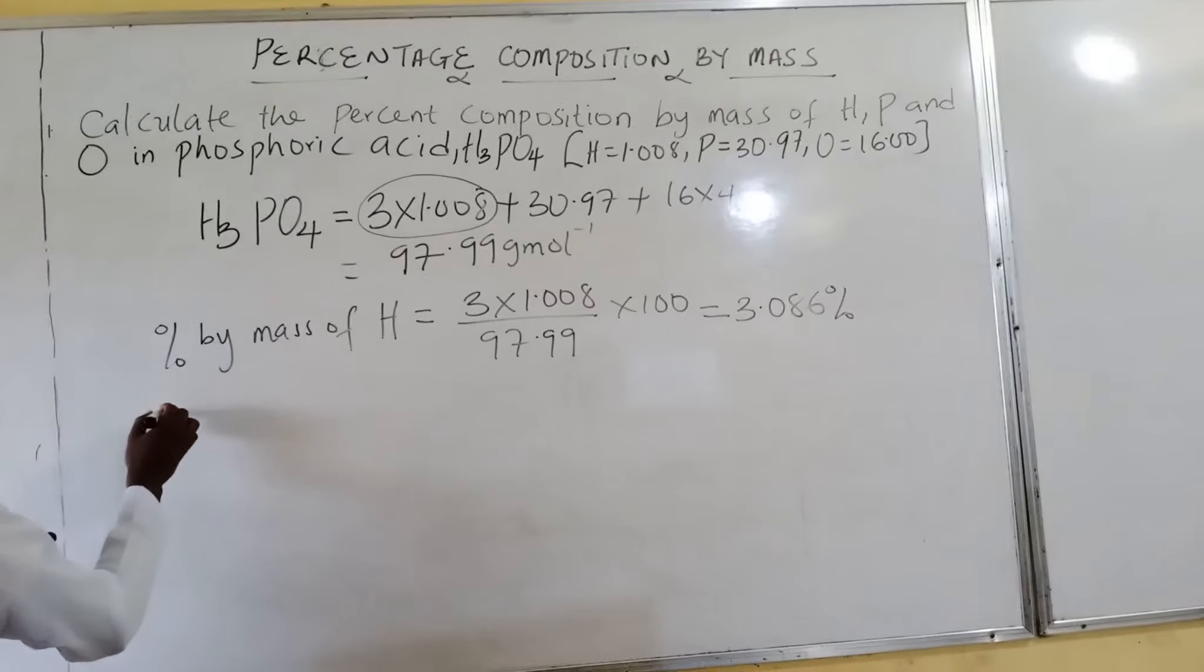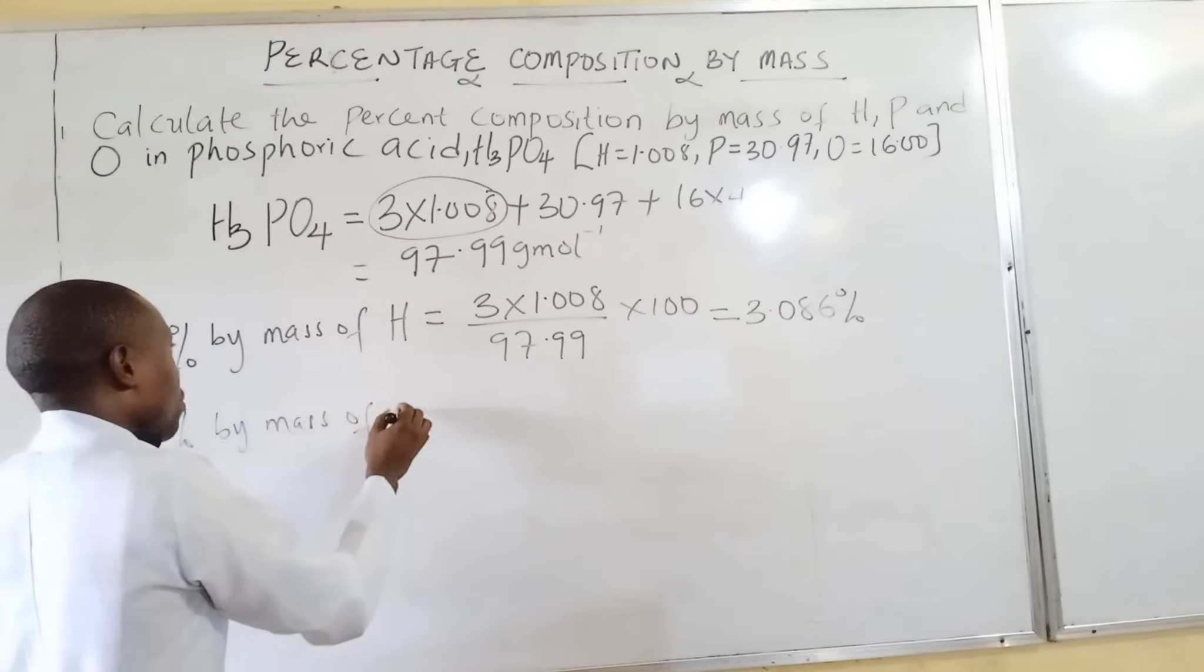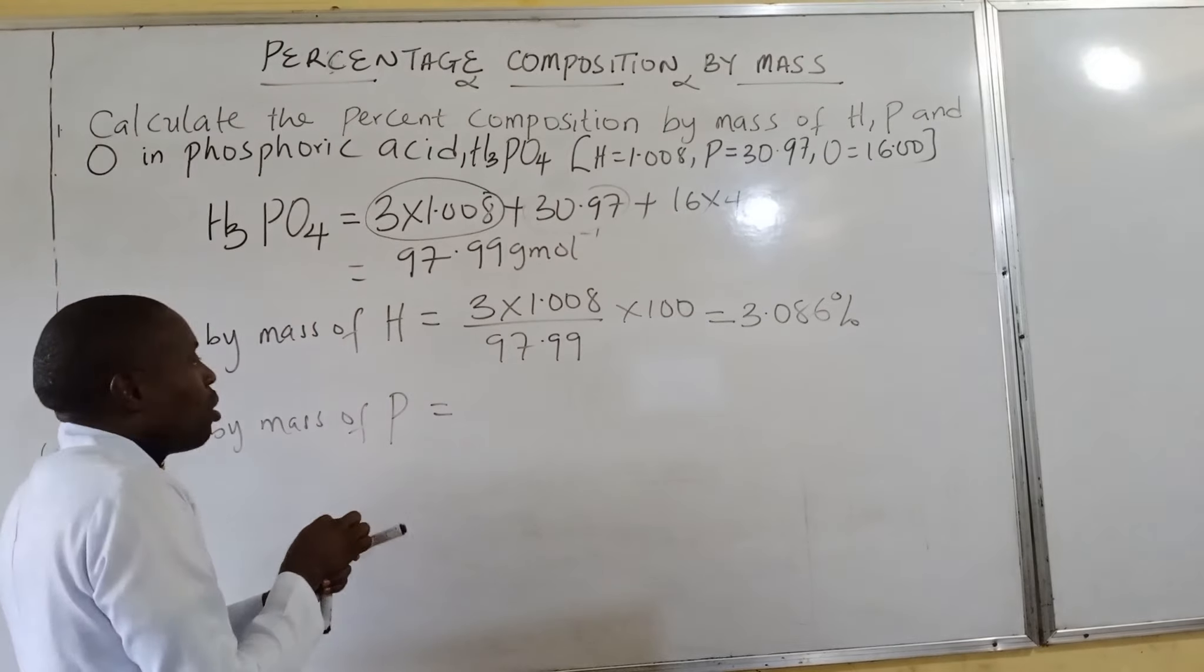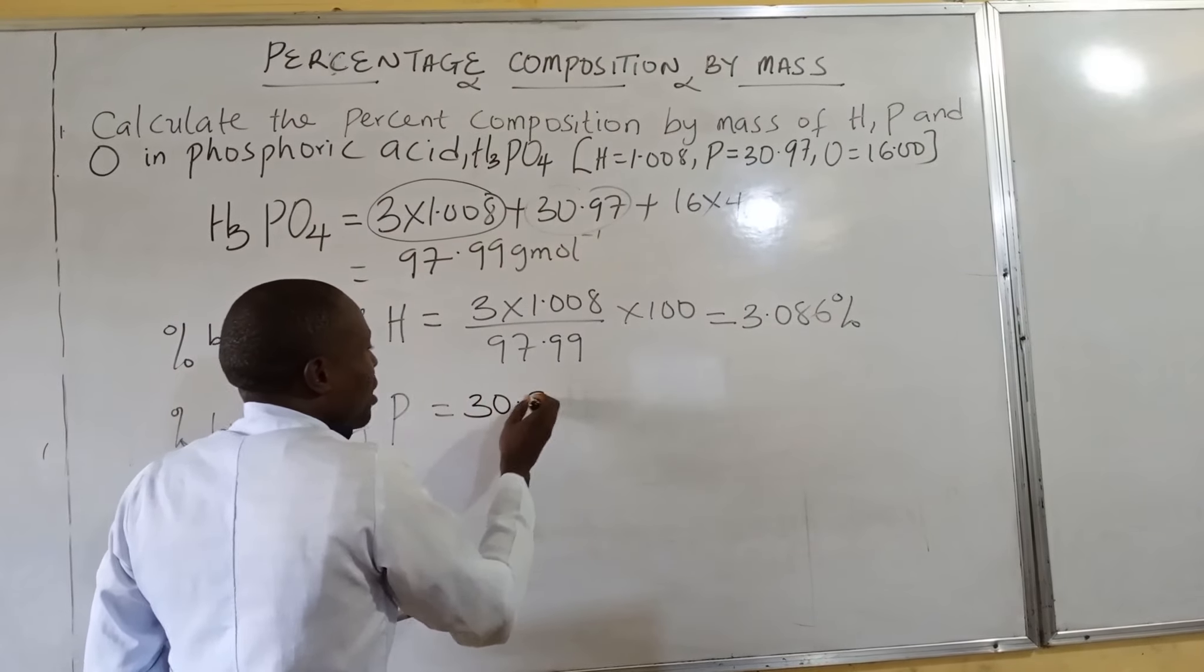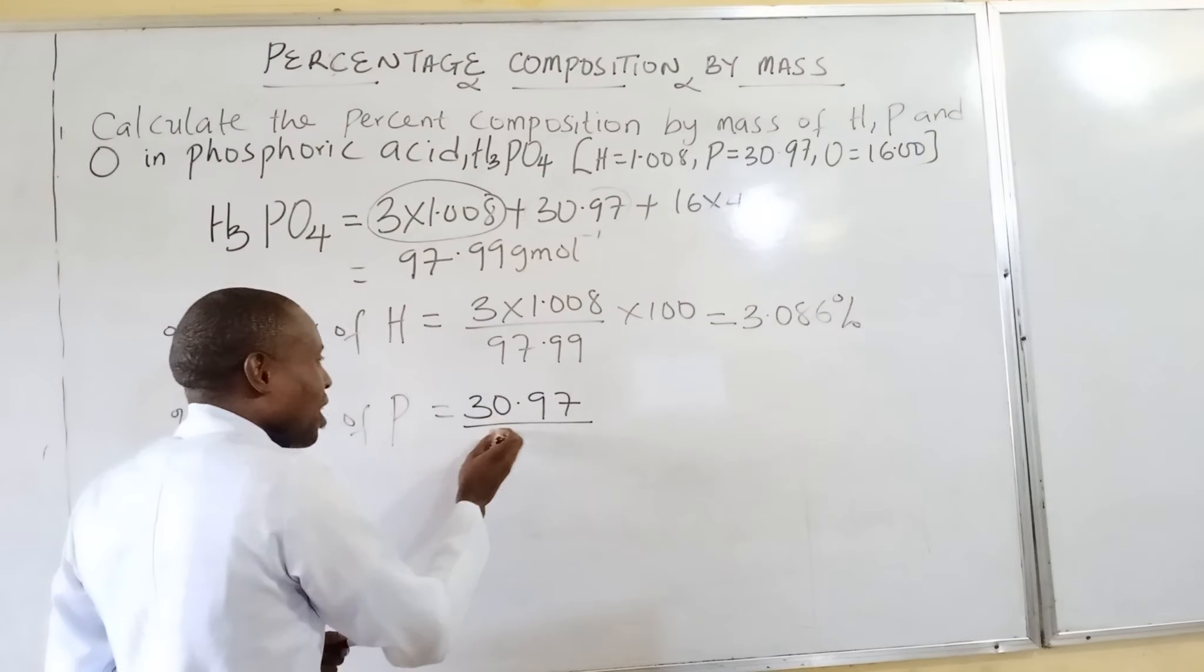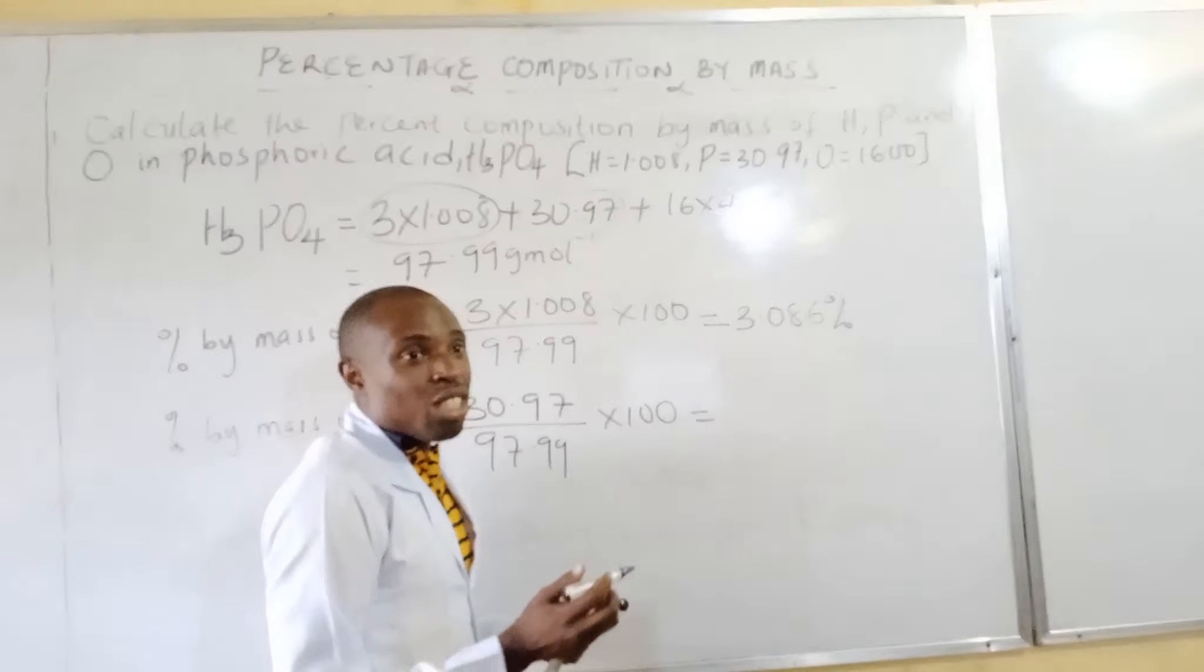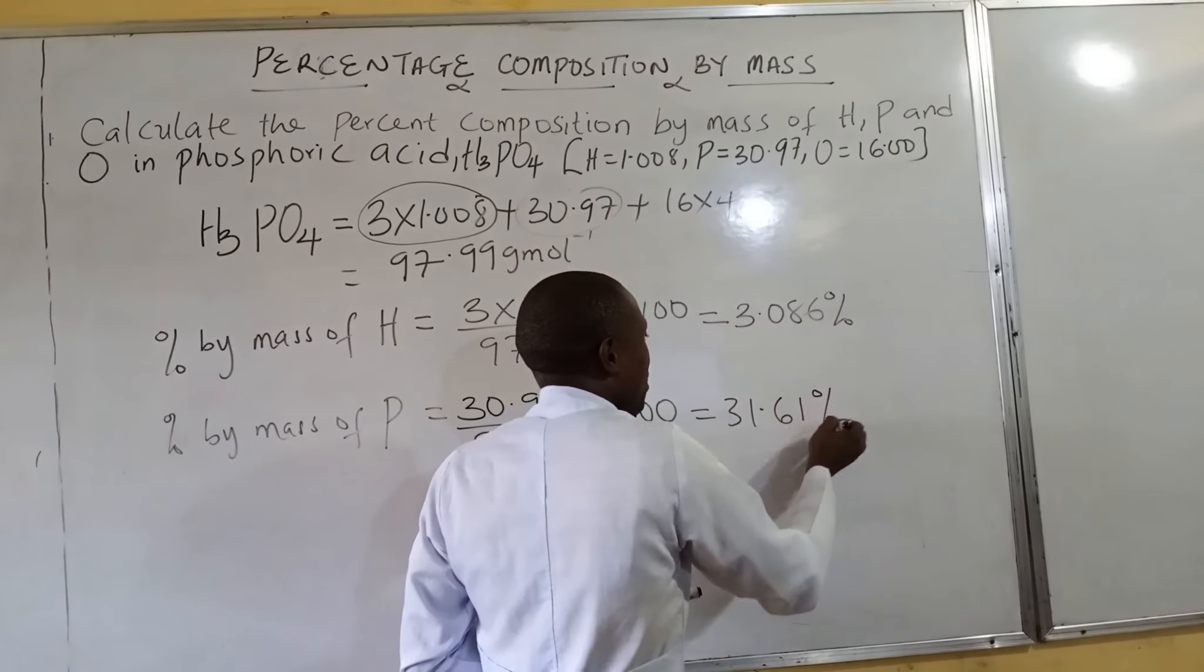Now we move to the percentage by mass of phosphorus. If you check it here, this is where you have it. Simple. So you have 30.97 over the molar mass of the compound, which is 97.99, times 100. The final answer is 31.61 percent.